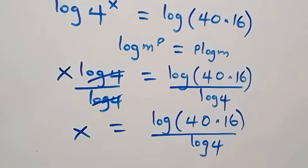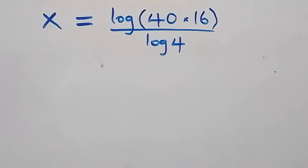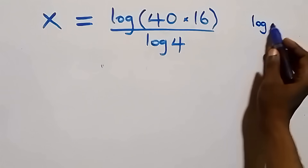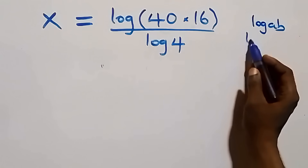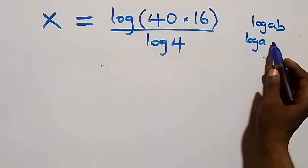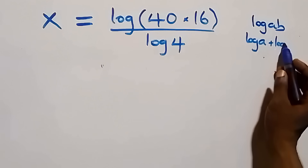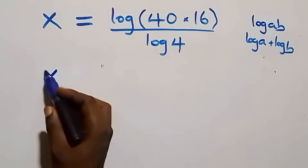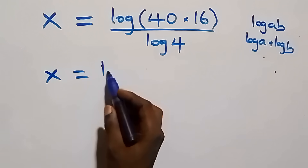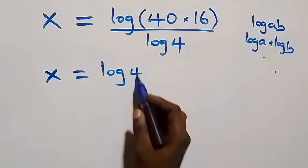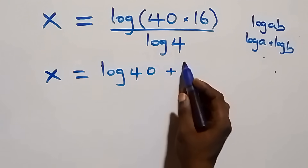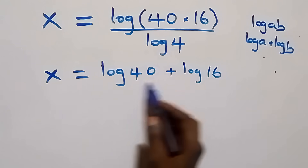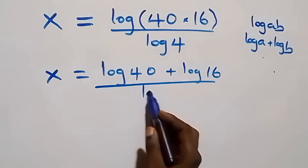This follows from the logarithm product rule: log(a times b) is the same as log a plus log b. So what we have becomes x equals log 40 plus log 16, all over log 4.